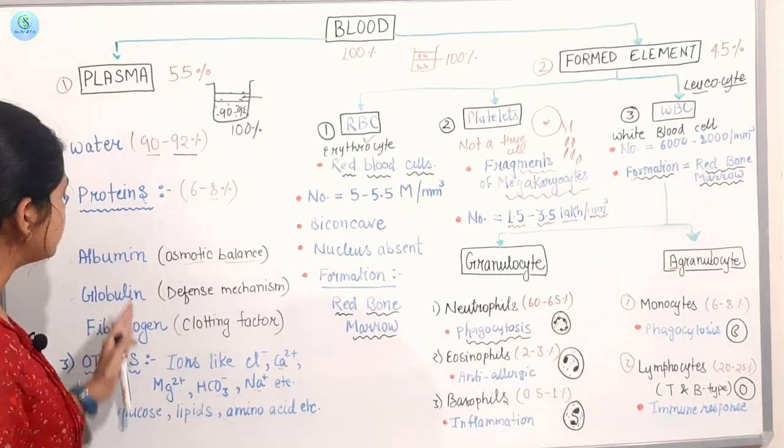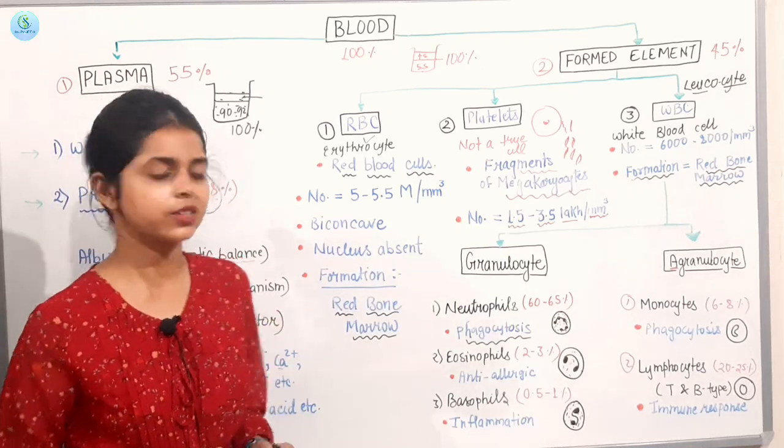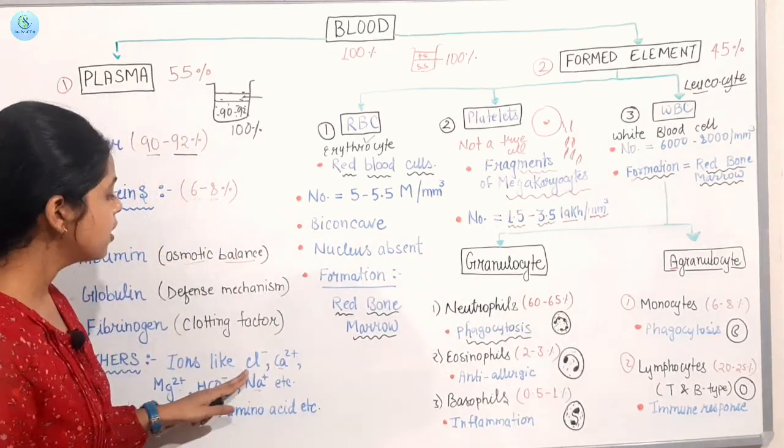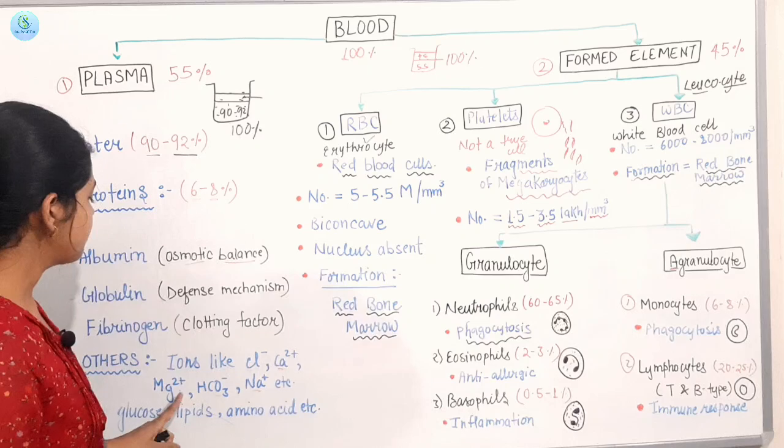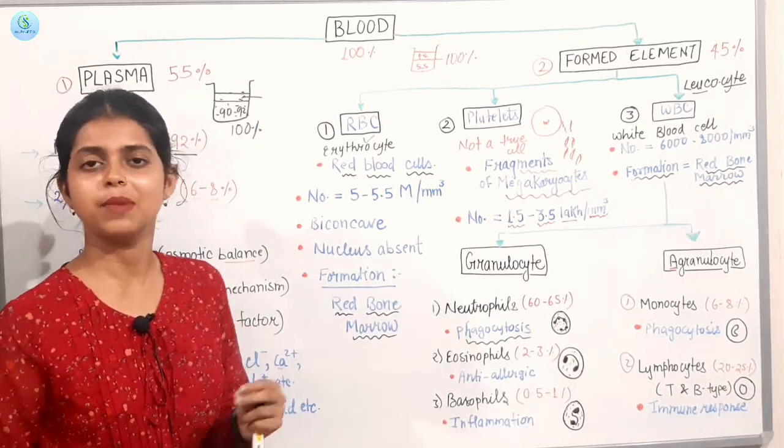Next, we have some other things. The ions are present. Which are ions? Chlorine, calcium, magnesium, bicarbonate and sodium. These are in our blood. They are present in plasma.